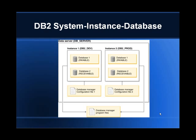Instances give you a logical grouping of databases. Instance 1 can have database 1 and database 2, and Instance 2 can also have its own databases. You can have multiple instances, each comprising a set of databases. This gives very good control over sharing of resources between instances. The underlying physical server is the same — say a 10 GB RAM machine with four processors — and how you manage memory between instances is completely configurable.